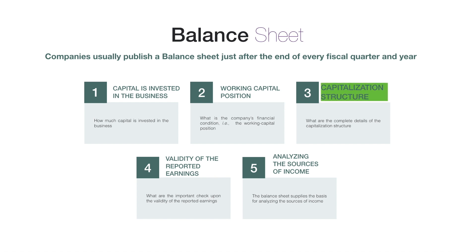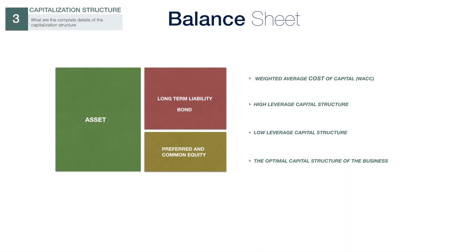The capital structure is a composition of long-term liabilities, specific short-term liabilities, common equity, and preferred equity, which funds a business uses for its operation and growth, which is also known as weighted average cost of capital. By looking at the balance sheet, we can confirm whether the company's capital structure is good or not.